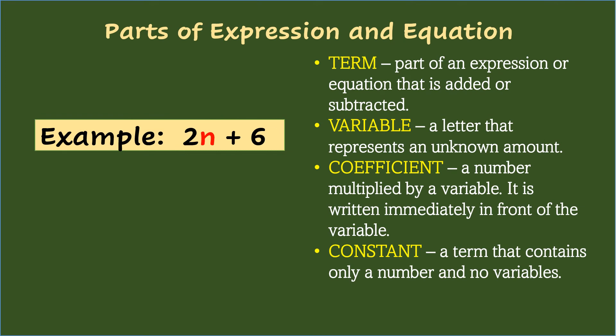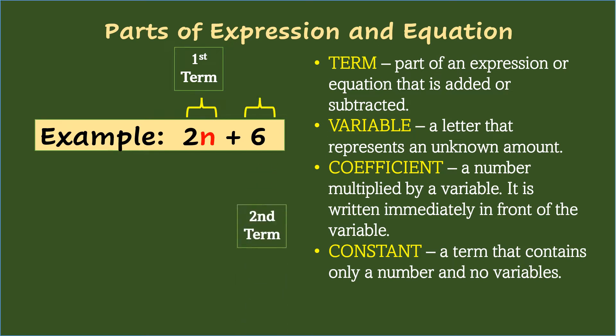Take note that expressions and equations are made up of different parts. For example, in 2n plus 6, the values 2n and 6 are called terms — 2n as the first term and 6 as the second term. A term is a part of an expression or equation that is added or subtracted.